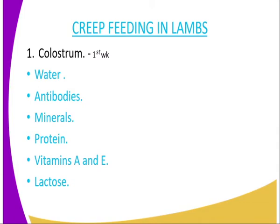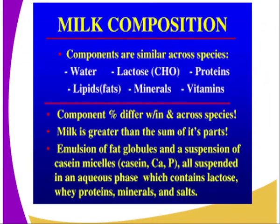During creep feeding, the first feed you are supposed to provide is the colostrum. This is the first milk produced by the female upon parturition. The colostrum is rich in water, antibodies, mineral salts, protein, vitamin A and E, and lactose. It is very nutritive and therefore promotes high growth of the young one. The presence of antibodies provides the young one with immunity to fight disease-causing microorganisms.